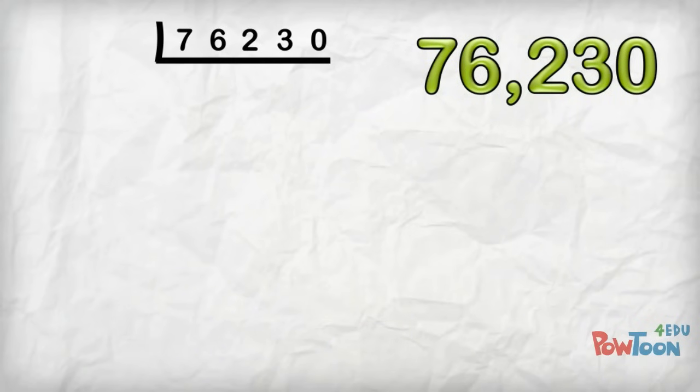Our number is even, so I'm going to divide by 2. 2's into 7, 3. 2's are 6, remainder 1. 2's into 16, 8. 2's are 16. 2's into 2, 1. 2's into 3, 1, remainder 1. 2's into 10, 5. 2's are 10.